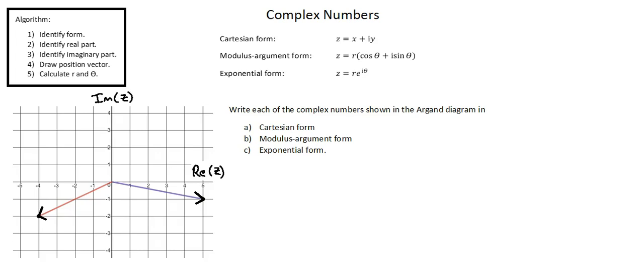Now, going to the top of the screen, let's take a look at the three different forms of representation of complex numbers. First, Cartesian form. z equals x plus iy. x is the real part of the complex number. y is the imaginary part of the complex number.